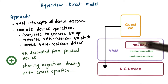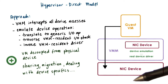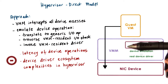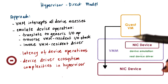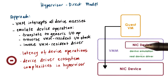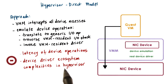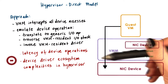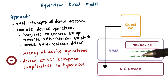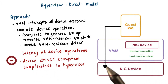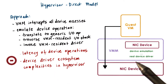This is a model originally adapted by the VMware ESX hypervisor. The downside is that it clearly adds latency on device accesses because of this emulation step. It also requires that the device driver ecosystem be integrated with the hypervisor — the hypervisor needs to support all of the drivers and is then exposed to all of the complexities and bugs of various device drivers.